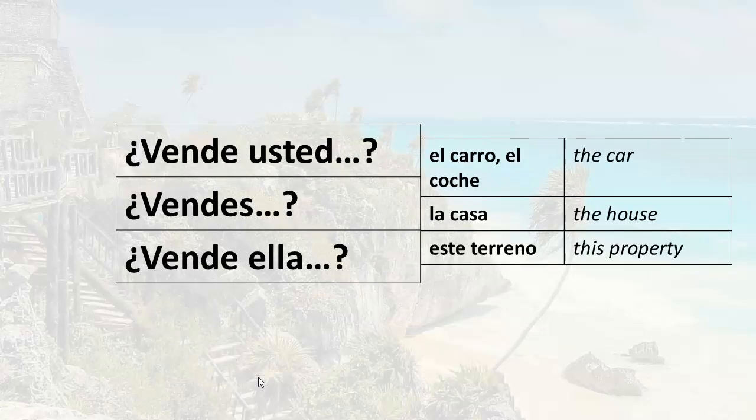We use vender with nouns to talk about what we are selling. For example, if you want to ask someone the question 'are you selling the car?' you could say vende usted el carro, or vende usted el coche. If you want to say 'do you sell the house?' you would ask vende usted la casa. If you want to ask 'are you selling this property?' the question would be vende usted este terreno.